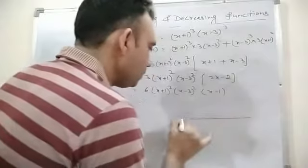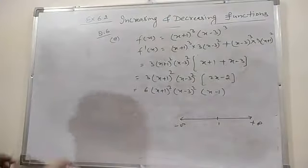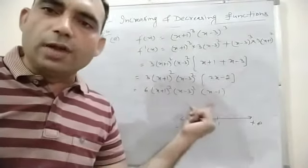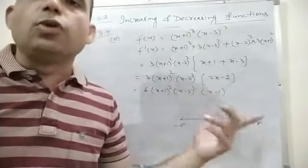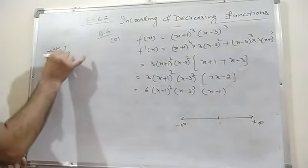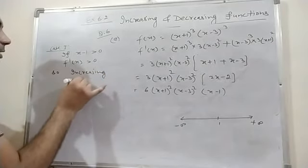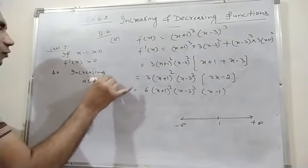Draw a number line with -∞ and +∞. Mark the point 1. If x - 1 < 0, the whole f'(x) is negative. If x - 1 > 0, f'(x) is positive. Case 1: x - 1 > 0 → f'(x) positive → function is increasing. So at x > 1, the function is increasing.